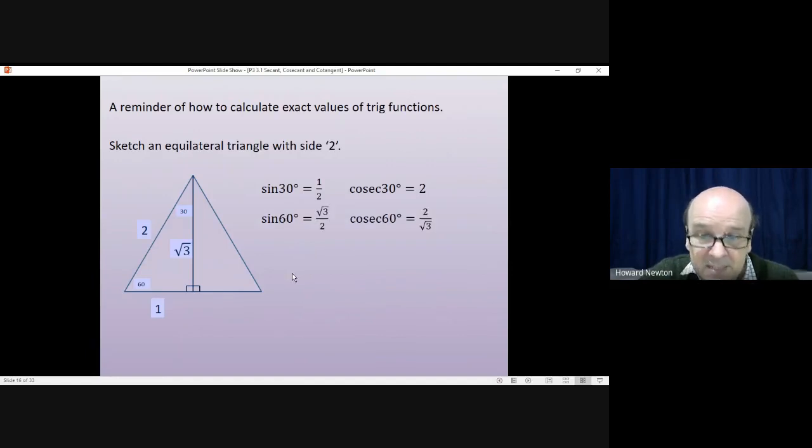Cosine of 60, with the opposite over hypotenuse again, root 3 over 2. Cosec is 1 over that. 1 over that fraction flips the fraction upside down, so it becomes 2 over root 3.